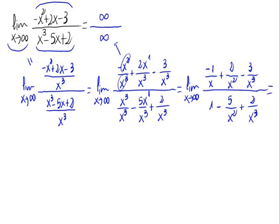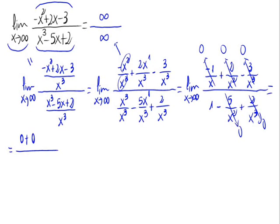Now, everything that has an x in the denominator approaches 0 as x approaches infinity. So the numerator becomes 0 minus 0 minus 0, which is 0. The denominator becomes 1 minus 0 plus 0, which is 1. Therefore this is equal to 0 divided by 1, and that equals 0.